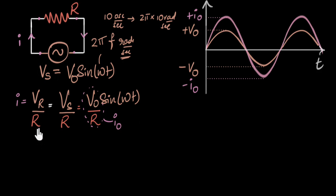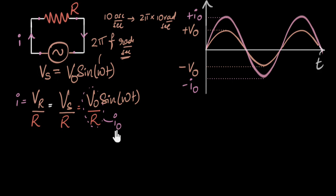These are two different graphs with their own scales, drawn on the same graph so we can compare their behavior. Even numerically, you might think I naught should be less than V naught since it's V naught divided by R, but R can be a fraction — so there's no necessity that I naught has to be smaller. That statement doesn't even make sense since they have different units. Anyway, this sets the stage for all the future circuits — more interesting ones with inductors and capacitors — which we'll look at in future videos.